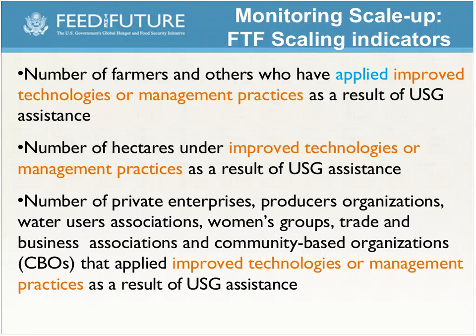There is a question about what constitutes an improved technology, which came up in several discussions. It's up to missions and their partners in developing scaling plans to figure out which technologies and practices make the most sense to scale up — those are the only ones you'd report on. There's also the issue of technology packages: conservation agriculture and integrated pest management are packages of individual technologies that can be applied in different combinations. It's good practice for missions to track those individual technologies even when offering them as a package.